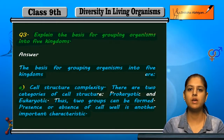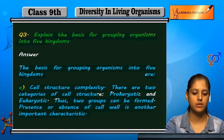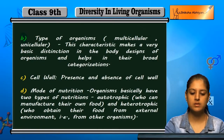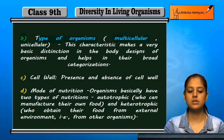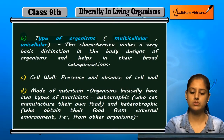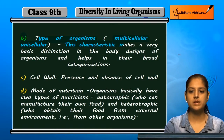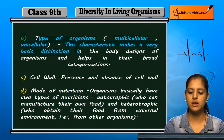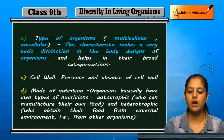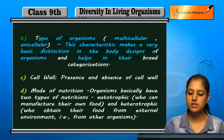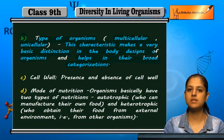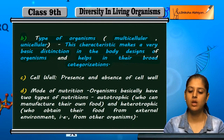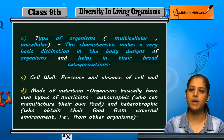Next is the type of organism. The type of organism can be multicellular or unicellular. These characteristics involve distinctions between body design and other things. This is a broad categorization, not a specific one, but a broad categorization based on the type of organism.